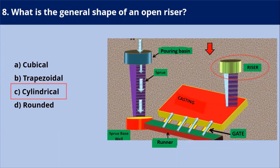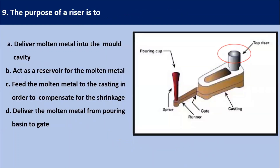Next question: what is the general shape of an open riser? As shown in this diagram, the riser has a cylindrical shape. The top of the cylinder is open, causing the molten metal to have direct exposure to the atmosphere. Our answer is C — cylindrical shape.